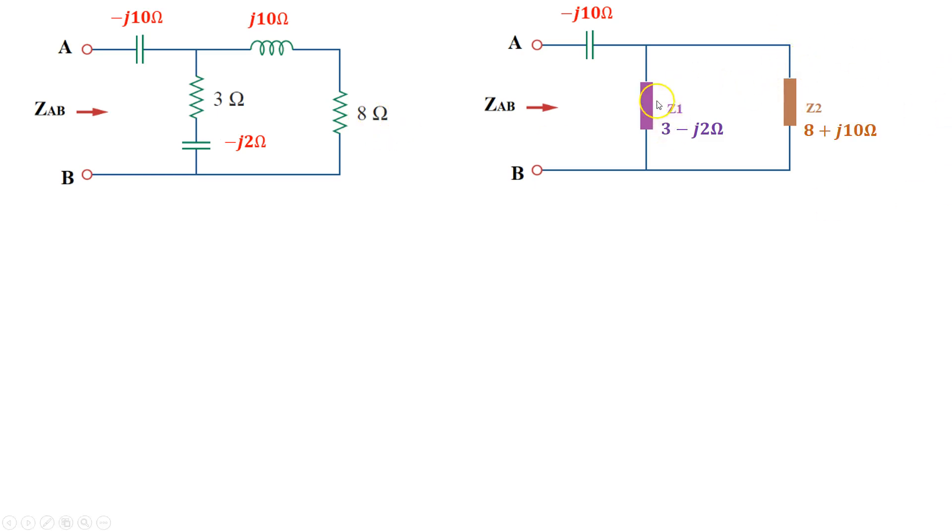Now, by careful observation, we also see that these two impedances that we just found, the combined impedances, are actually in parallel with each other. z1 and z2 are parallel with each other.